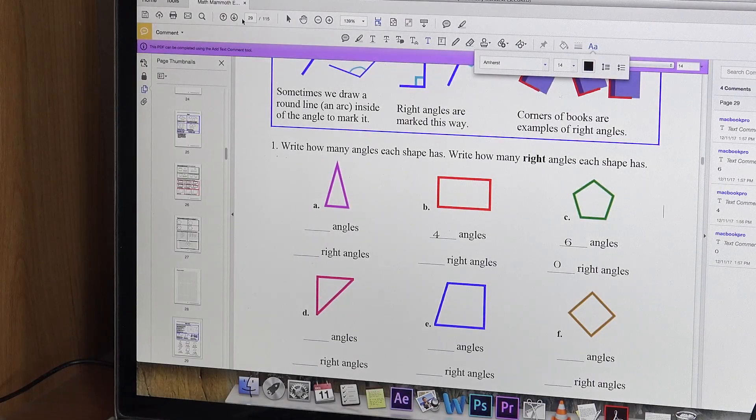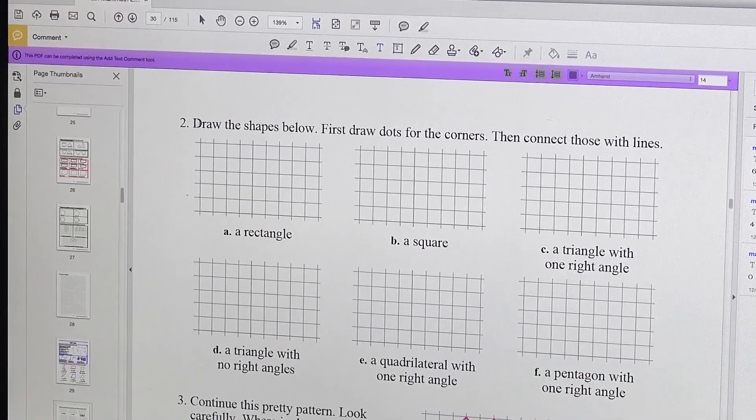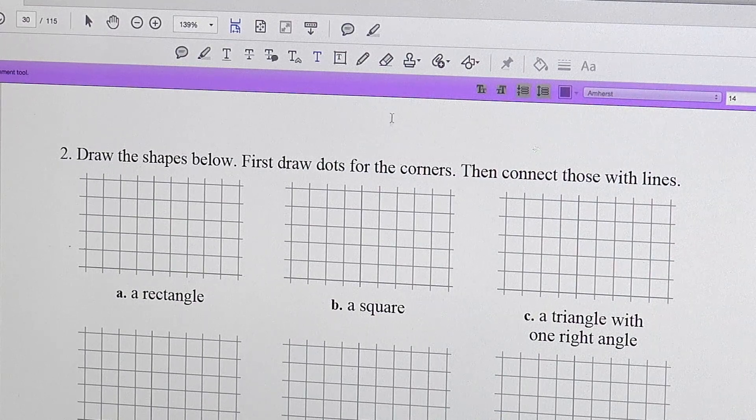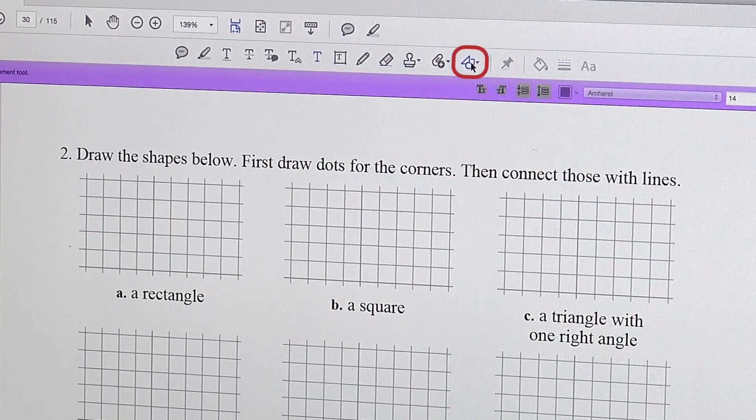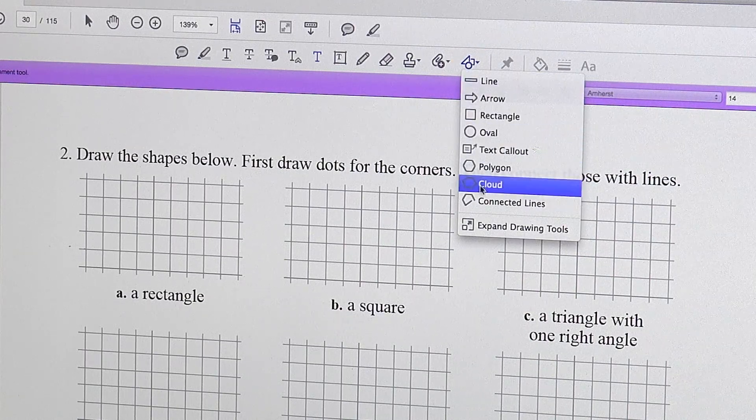Now let's go on to the next page and look at some other tools. Over here draw the shapes below. So here we need to draw a rectangle and we can. Over here this button here is drawing tools. So you click it once and you see all these drawing tools.